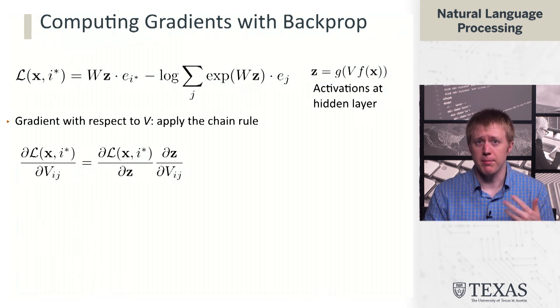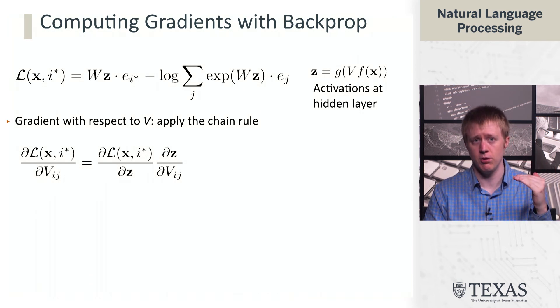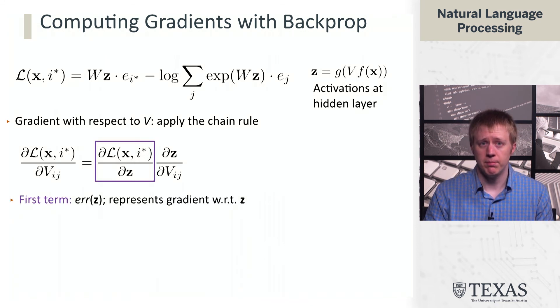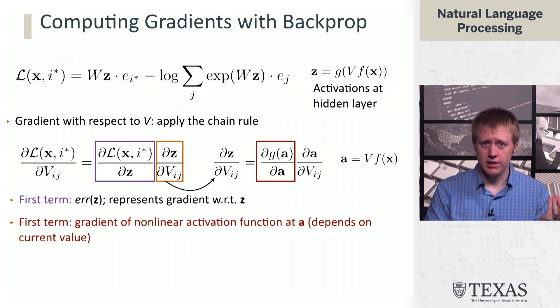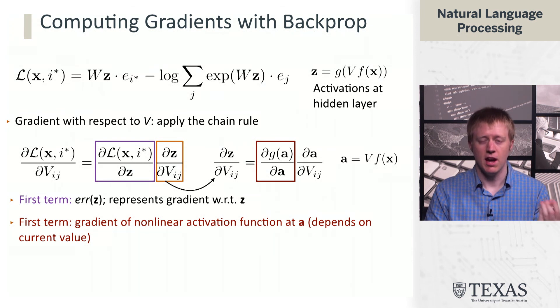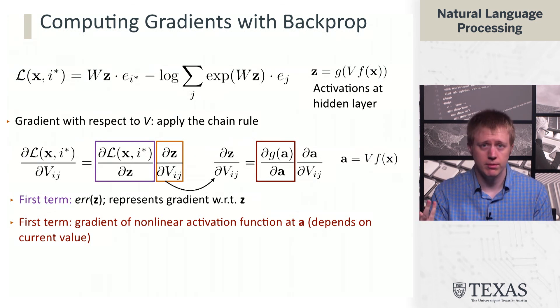What we're trying to do is compute the gradient of the loss with respect to the values in the V matrix, which is the first matrix in the computation. Using the chain rule, we first compute the gradient of the loss with respect to z - that's the error term. Then we multiply that by the gradient of z with respect to the matrix V. This second term involves dealing with the gradient of the activation function, which we've chosen like tanh or rectified linear units, which are differentiable.